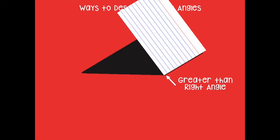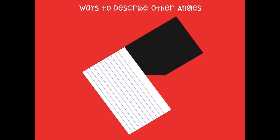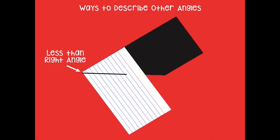You can also call a greater-than-right angle an obtuse angle — that is another name for this type of angle. Now here, my angle doesn't fully go all the way to my right angle — it stops less than that. So this angle is a less-than-right angle, also known as an acute angle. I think of it as such a cute little angle because it's just a small one — less than a right angle. That's how I remember it's called an acute angle.